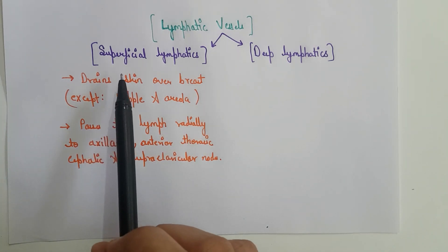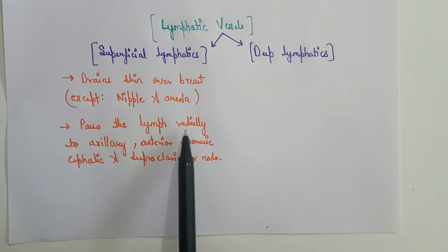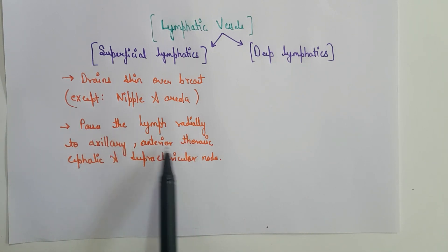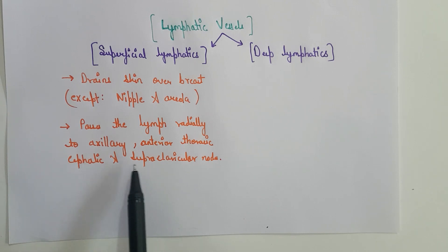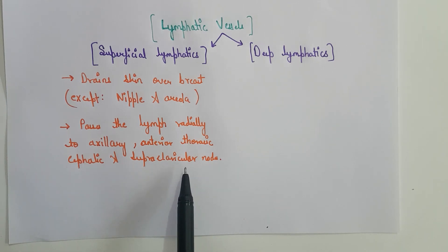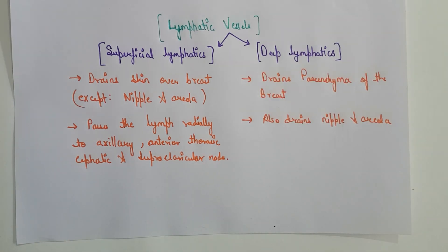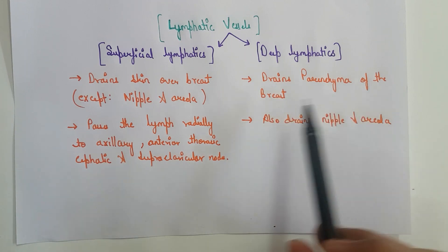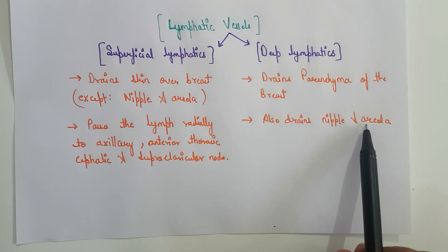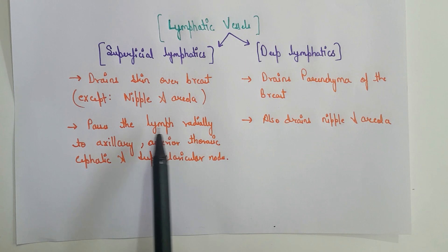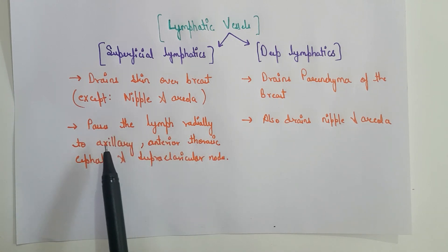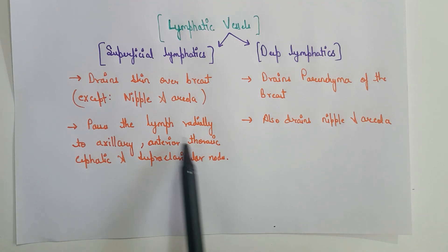The superficial lymphatics pass the lymph radially to the axillary, the anterior thoracic or parasternal, the cephalic, and the supraclavicular nodes. The deep lymphatics drain the parenchyma of the breast and also the nipple and areola. Just like the superficial lymphatics, the deep lymphatics also pass the lymph radially to the axillary, anterior thoracic, cephalic, and supraclavicular nodes.